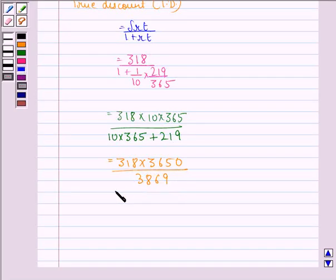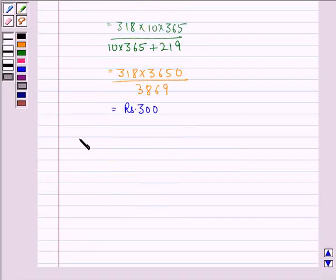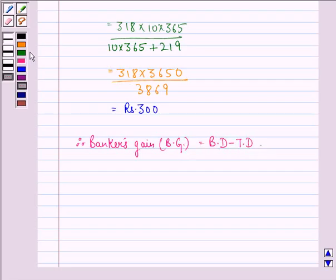Therefore, banker's gain, that is BG, is banker's discount minus true discount, that equals 318 minus 300, which equals rupees 18.